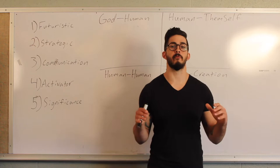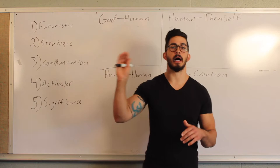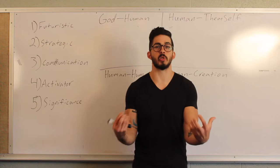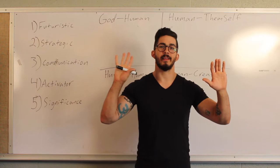Now, in Genesis 1 and 2, we see God create four relationships on this earth. The first relationship he makes is between God and mankind. And this relationship is primary — it's the relationship behind everything. You see God breathe life into Adam, and he creates this relationship between God and mankind.